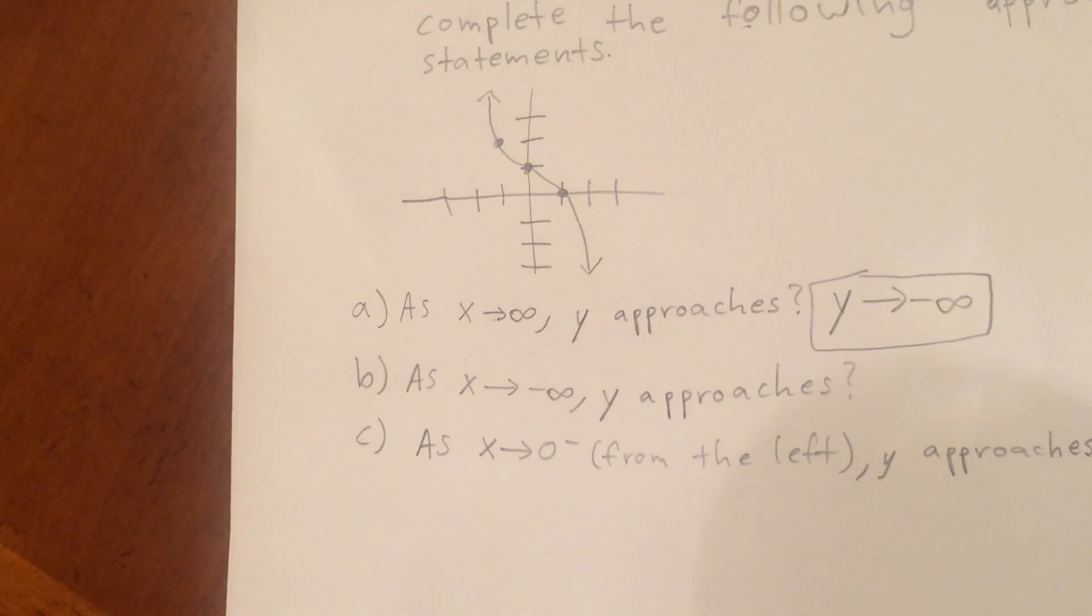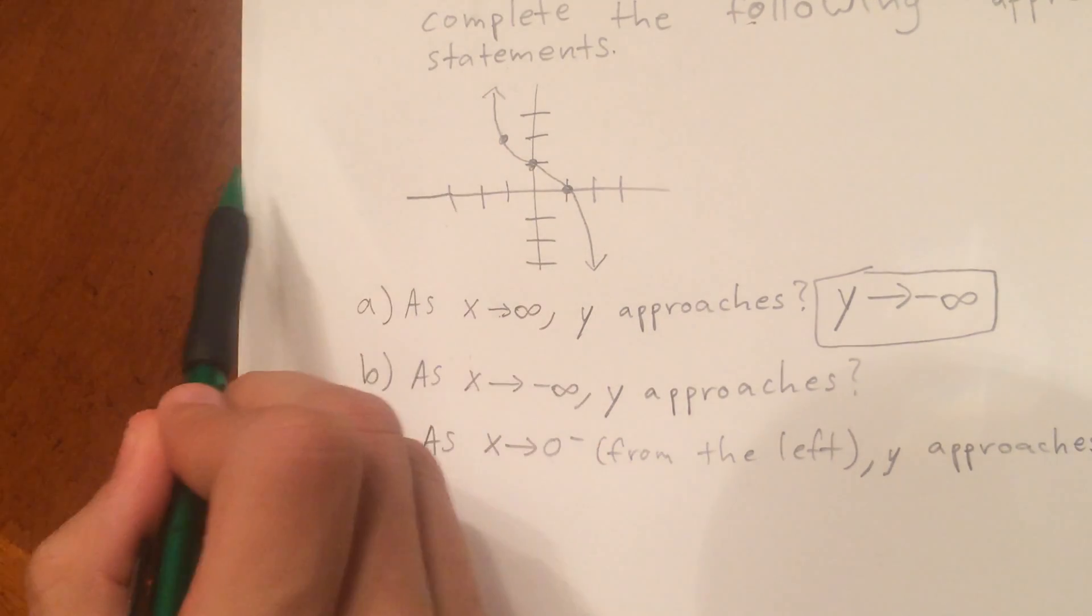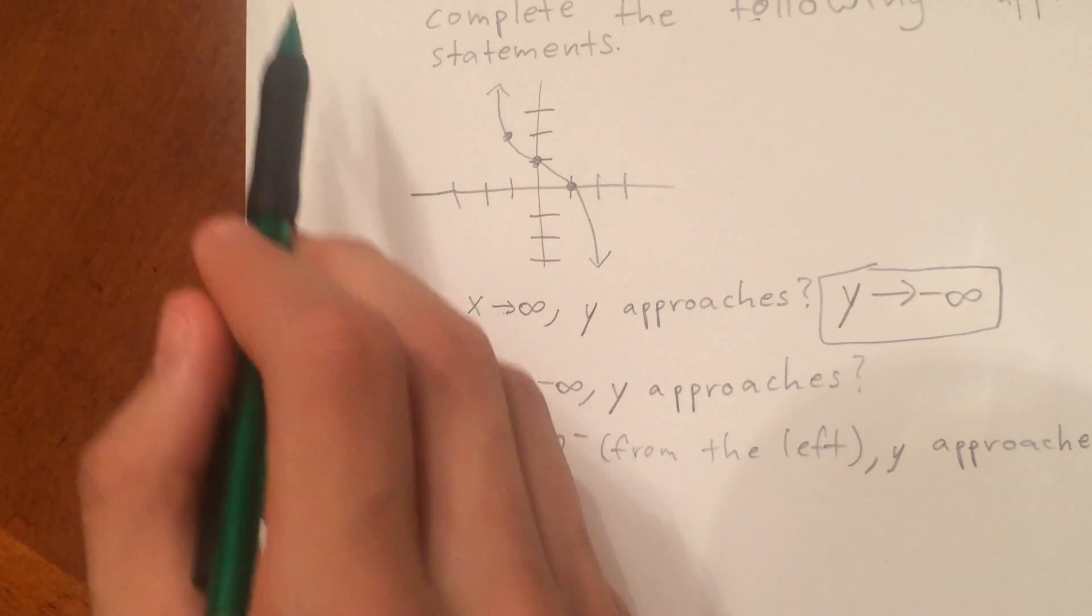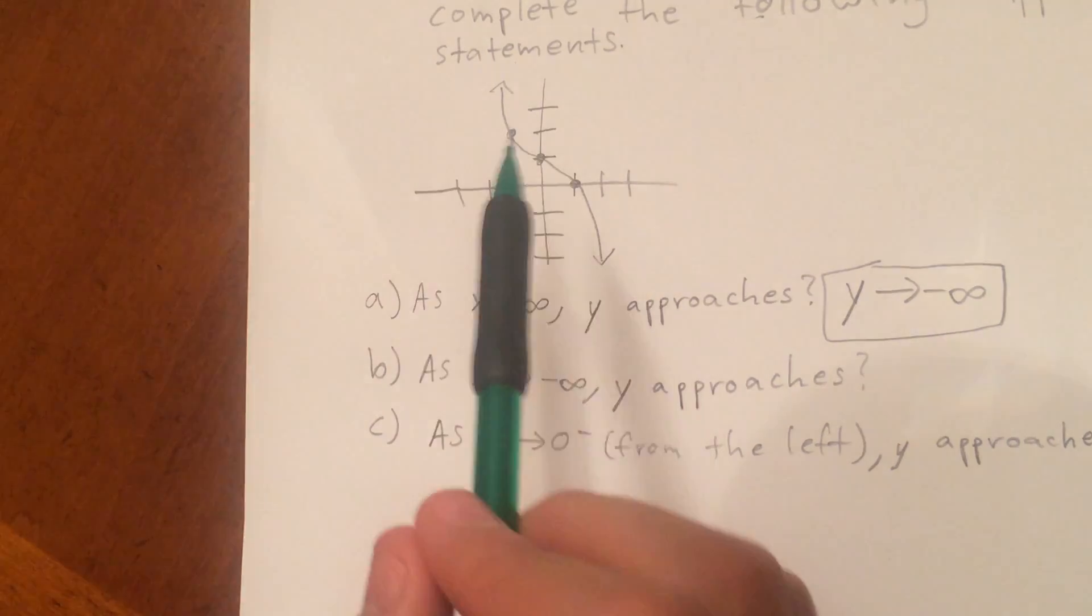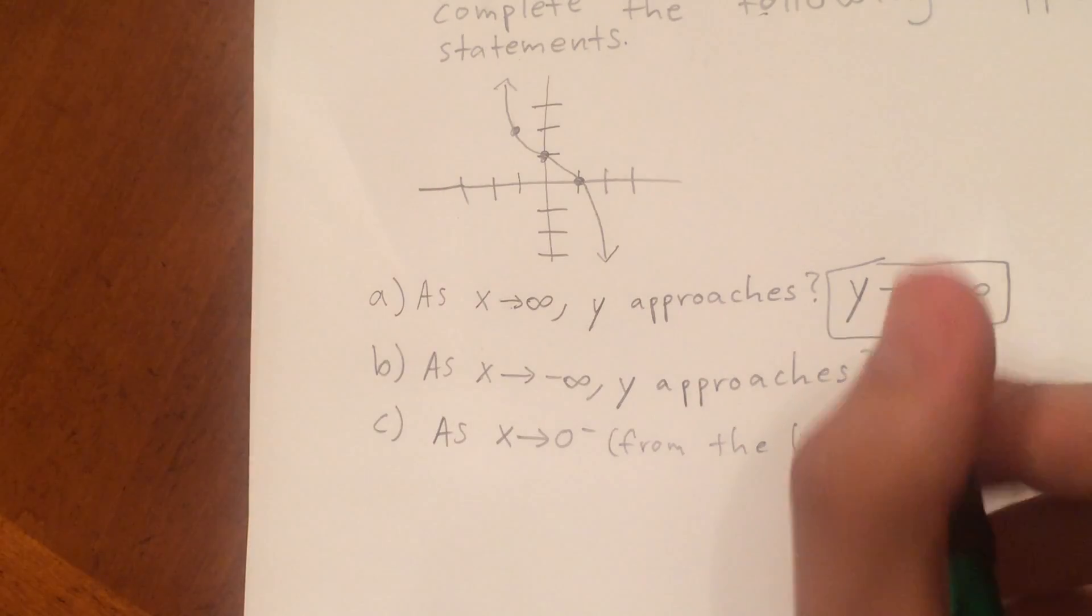And then as the x values approach negative infinity, y clearly increases. The y values increase, so y approaches infinity.